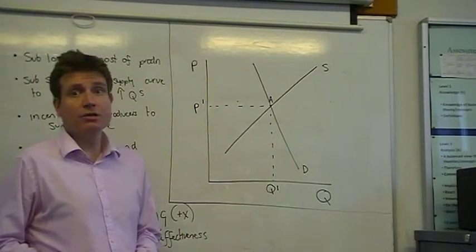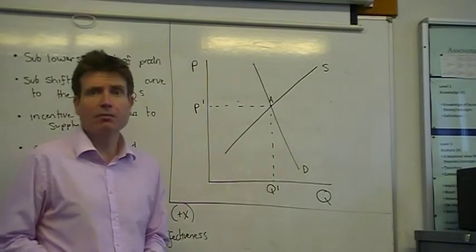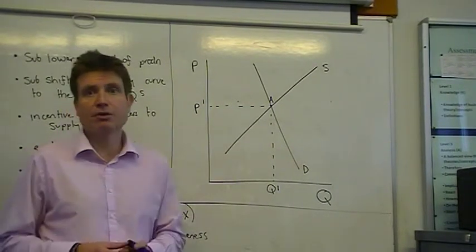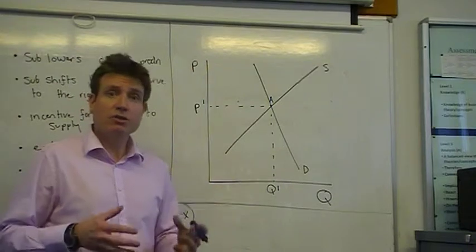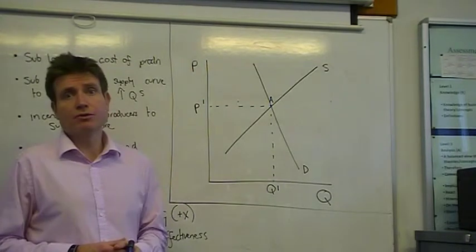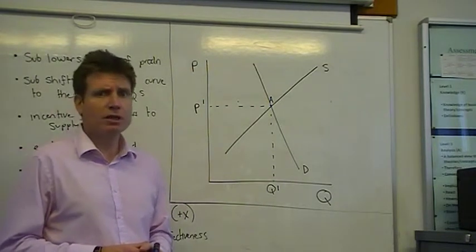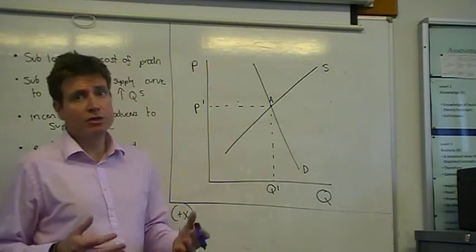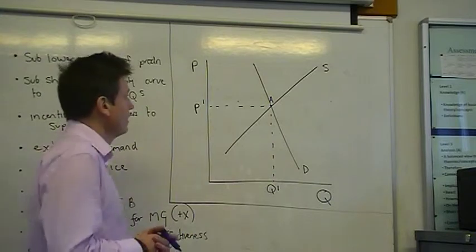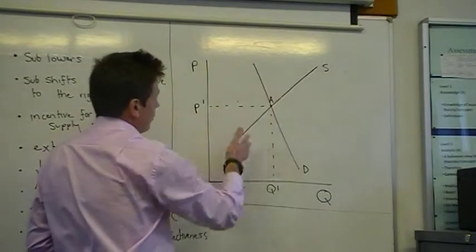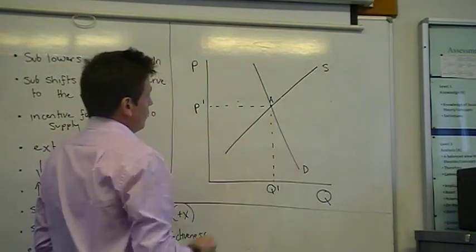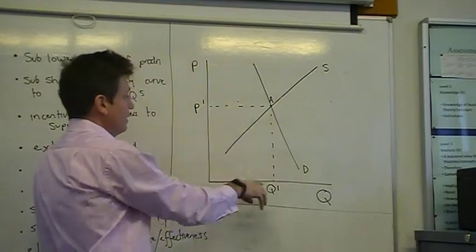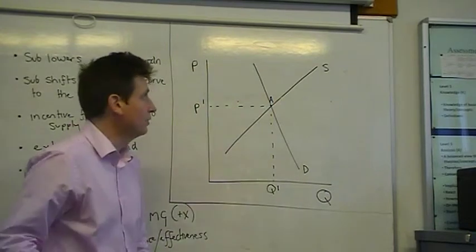Today we're going to have a look at the subsidy diagram using the supply and demand approach. You can use the marginal approach as well, but on the specification we use, you don't need to. So here we've got a supply curve, demand curve, equilibrium at A, price P1, Q1.